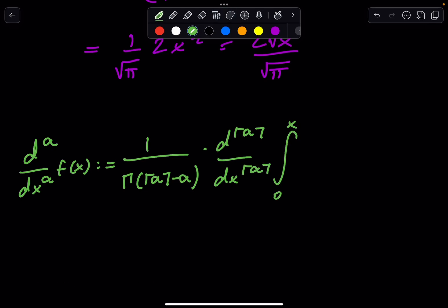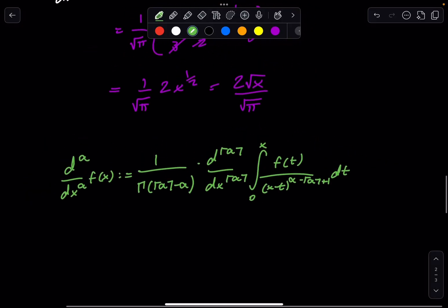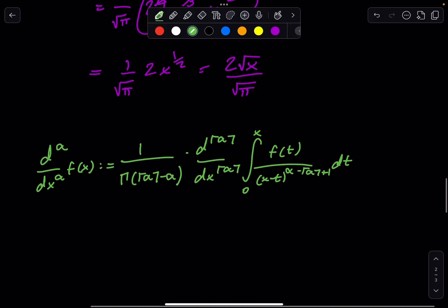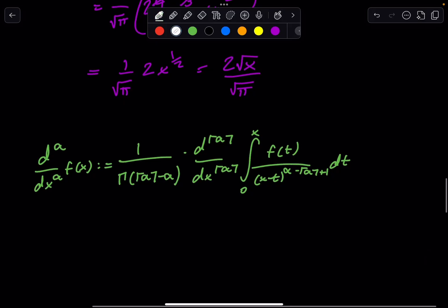times the integral from 0 to x of f(t) all over (x minus t) to the (α minus ceiling of α plus 1) dt. That is a beast of a formula. That is absolutely insane. And proving this is really diabolical, to be honest. But I could do it in another video. I don't have the proof memorized on the top of my head, so I will have to research that.